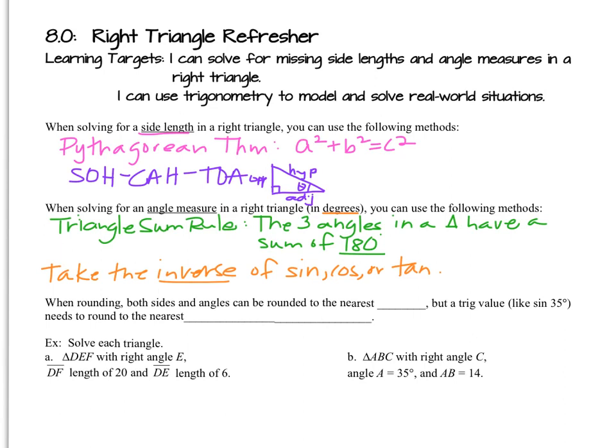When you're trying to find an angle measure in any right triangle, we're going to keep everything in degree mode. Make sure your calculator is in degree mode and we can keep it like that for the entire chapter. Your choices for finding angle measures: we could do just the triangle sum rule, which means in any given triangle the three angles always have a sum of 180. If you know two of the angles, you can just subtract from 180 to get the missing angle.